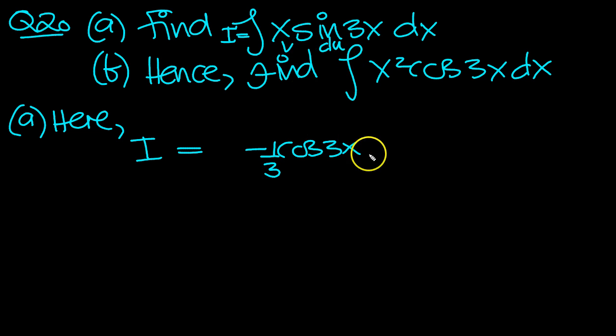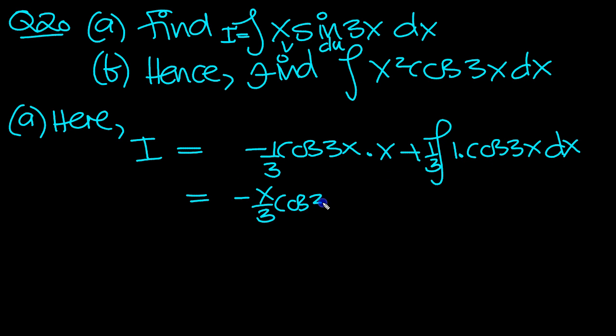So there's u times v minus the integral of u, which is this. So the minus can come here. The third can come here. We've got cosine 3x. That was u. And then dv, which is 1.